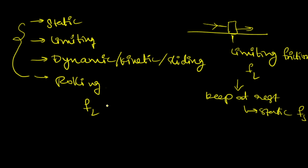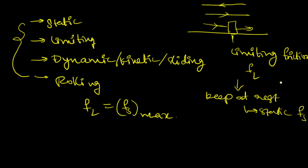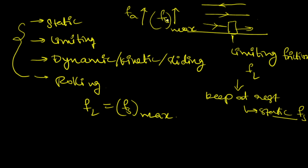This limiting friction is equal to maximum static friction. As the applied force increases, static friction also increases. But at some limiting point — the maximum point — maximum static friction is reached. This limiting friction is equal to the maximum of the static friction.